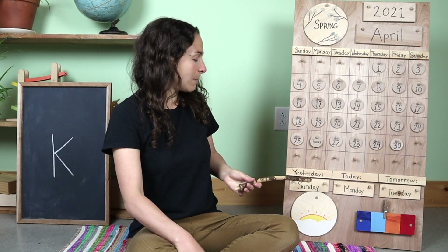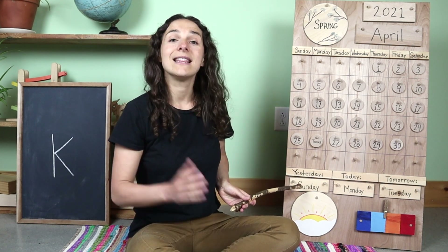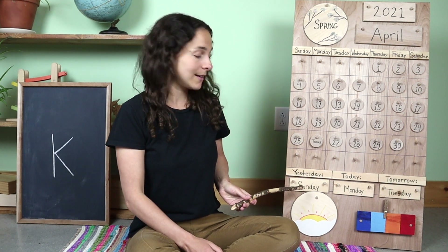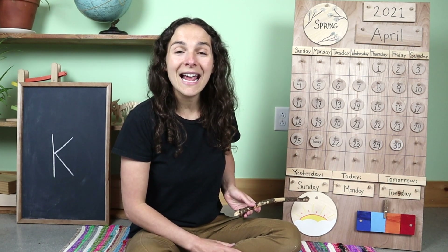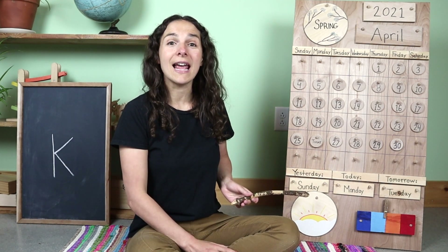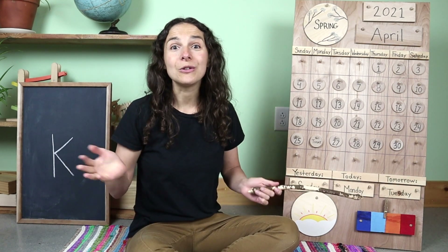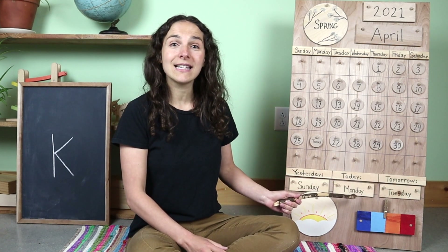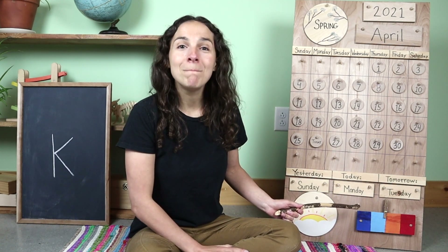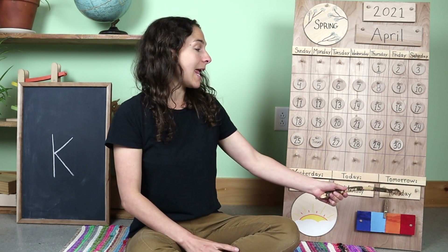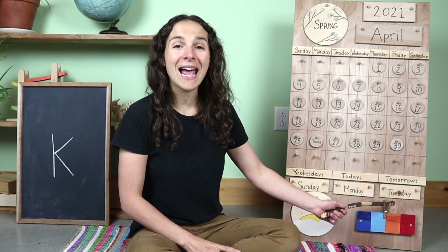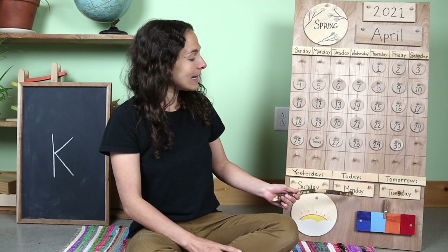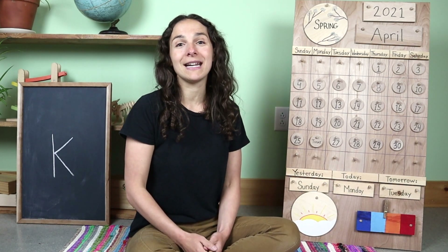I'm going to travel down to the bottom of the chart. This says that yesterday was — here's your clue — Sunday. Yesterday was Sunday, the last day of the weekend. So that means that today is Monday, the first day of the weekday. And tomorrow will be Tuesday. But let's go back to today and sing Today is Monday together.